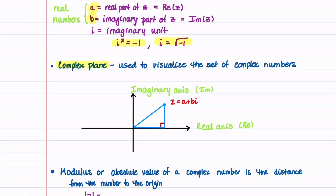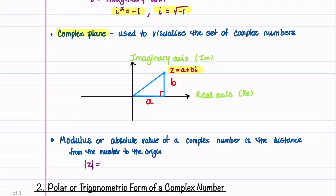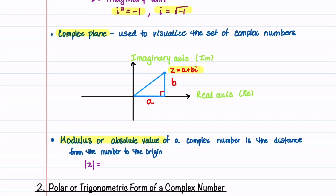The complex plane is used to visualize the set of complex numbers. Z is our complex number, A is the real part of z and lies on the real axis, and B is the imaginary part of z and lies on the imaginary axis. The modulus or absolute value of a complex number is the distance from the number to the origin, equal to the square root of a squared plus b squared.